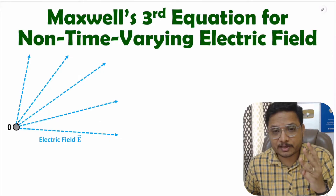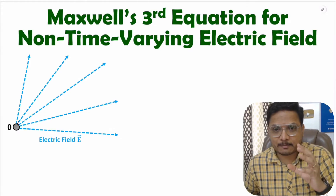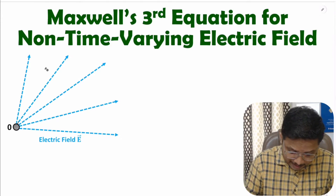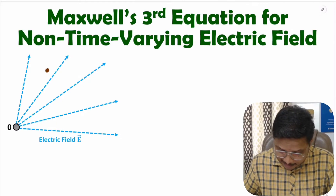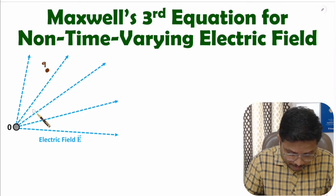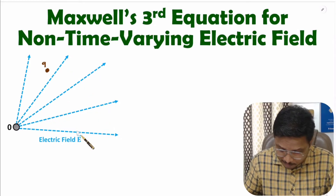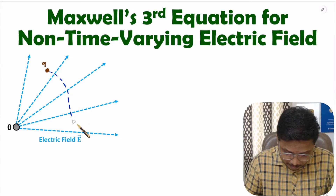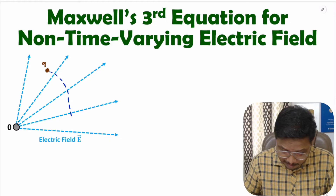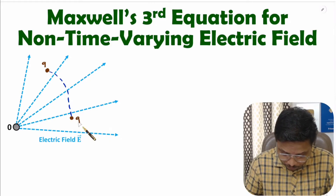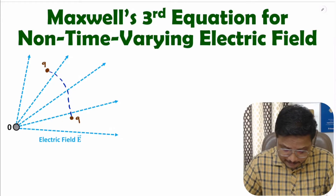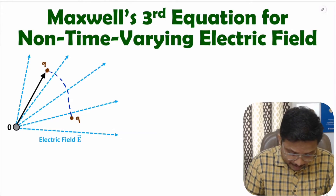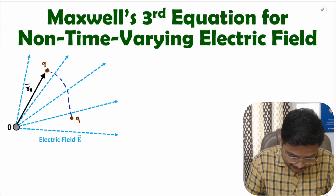Maxwell's third equation is based on electric potential. Let me explain how it is based on electric potential. Let us consider here we have one charge having value Q. Because of this electric field, this charge is moving along a trajectory you can observe. Let us consider the charge is coming over here. This charge Q has position vector Ra.